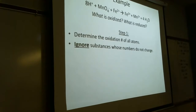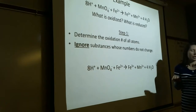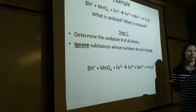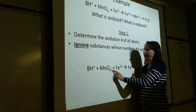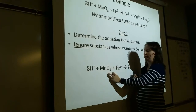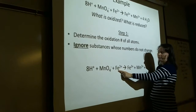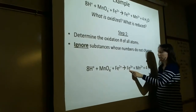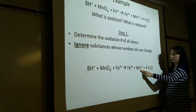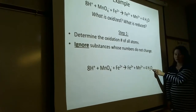Aluminum went from 0 to +3 — oxidized (LEO step). Hydrogen went from +1 to 0 — reduced (GER step). Chlorine is a spectator. Forgetting to balance the equation doesn't affect your oxidation number assignments.